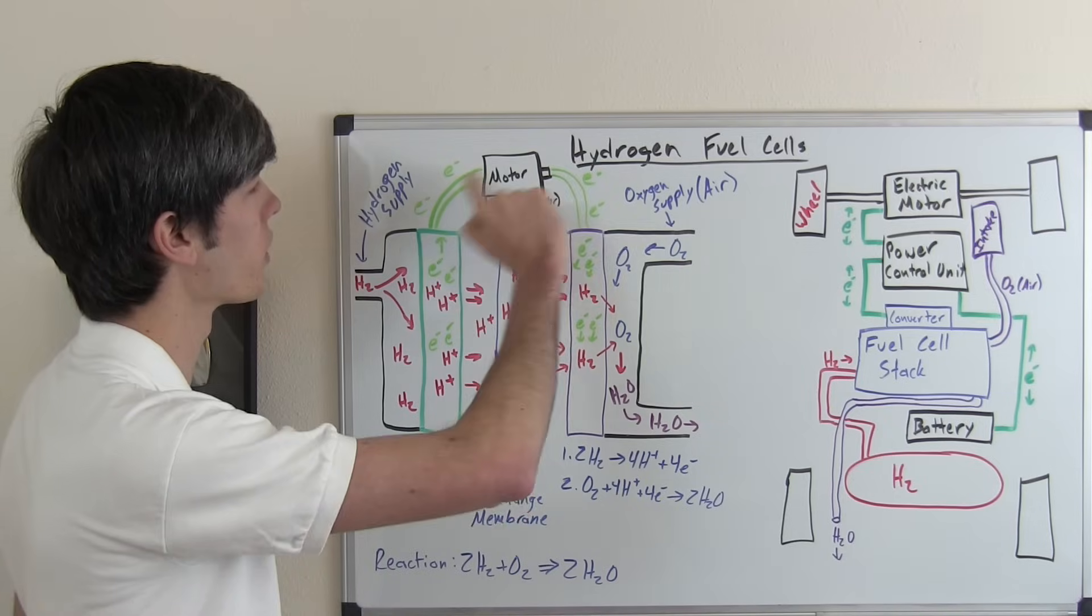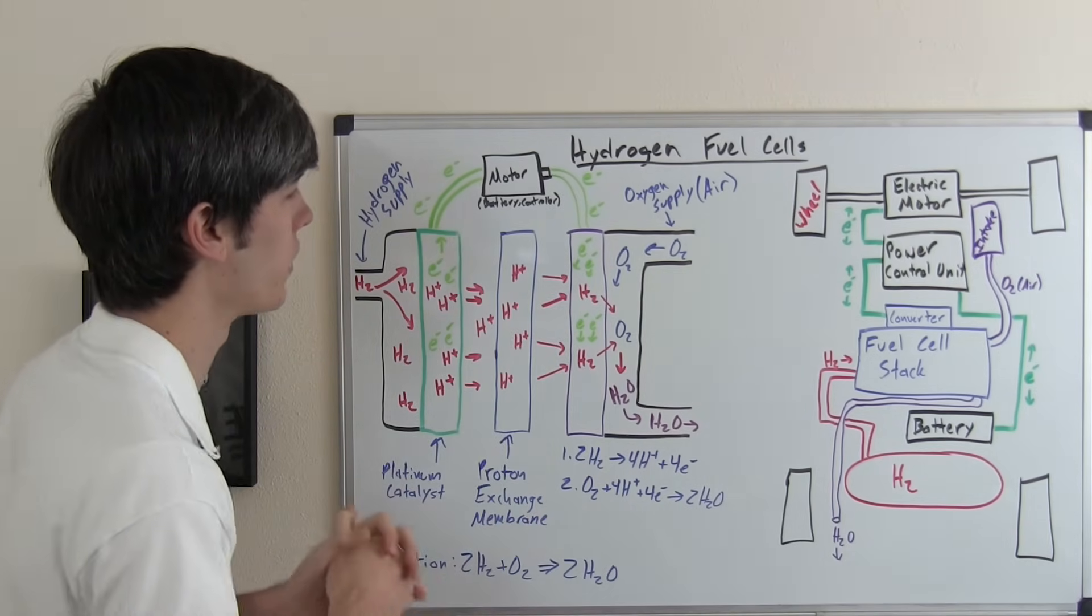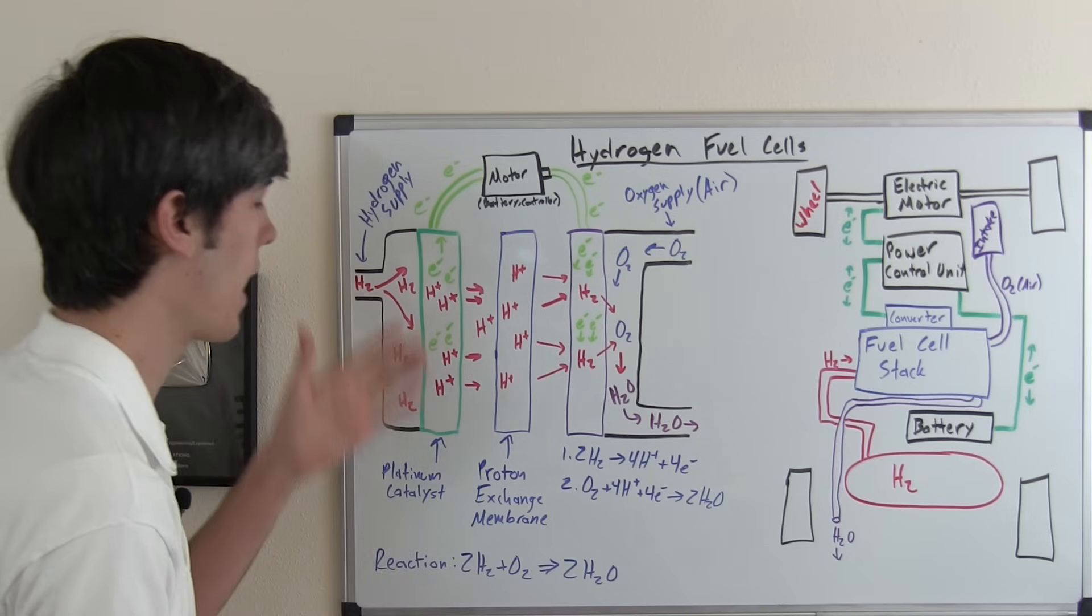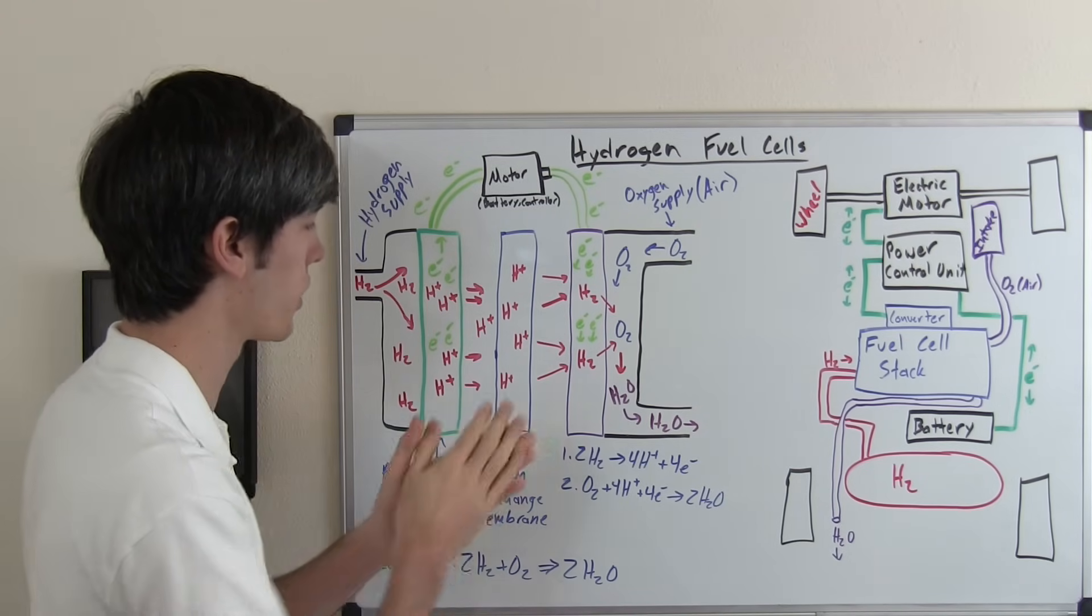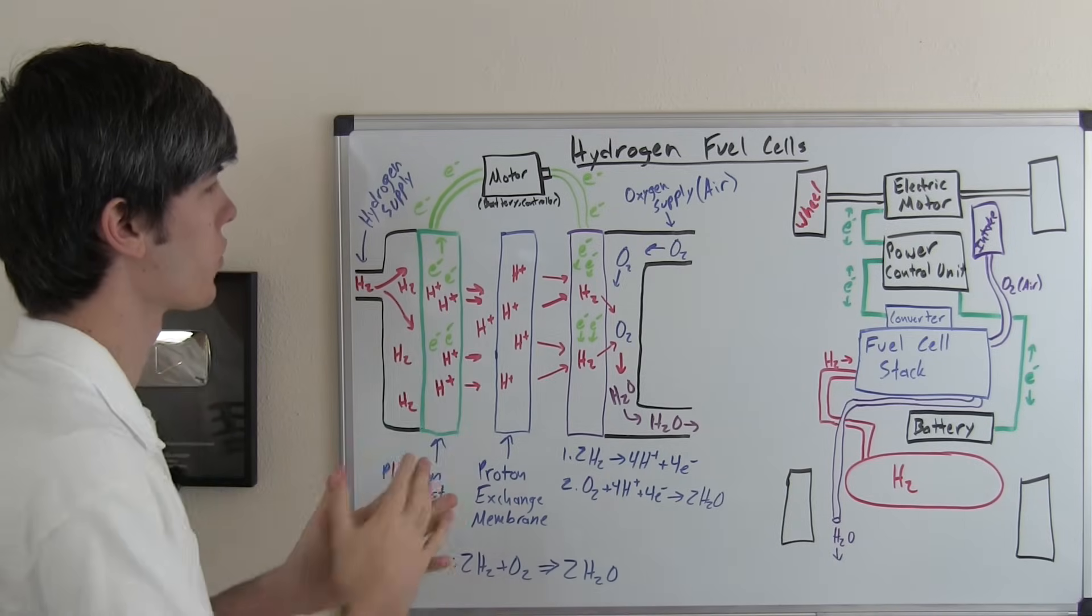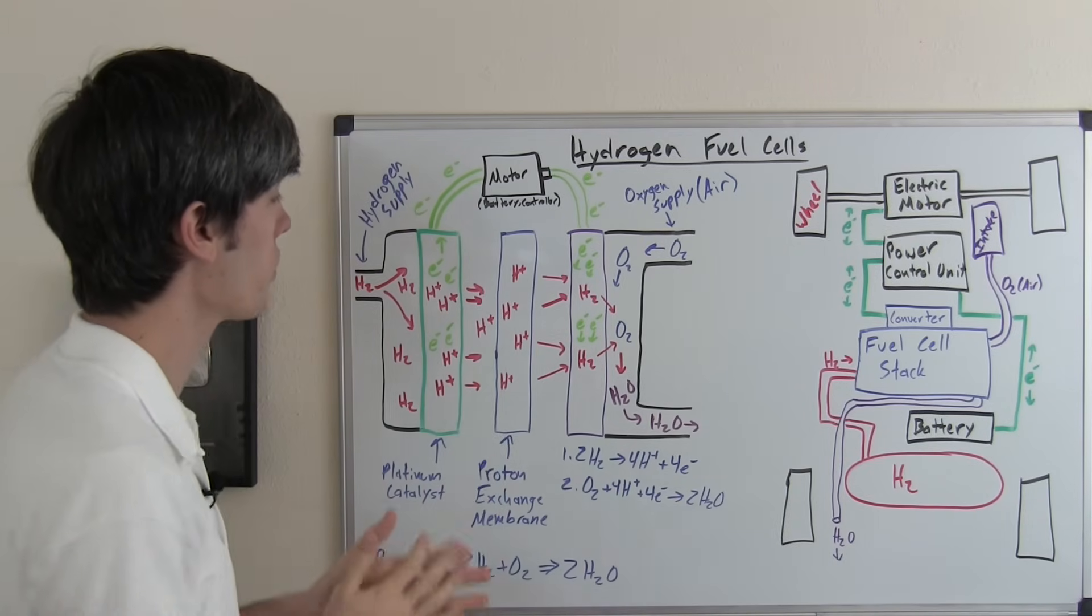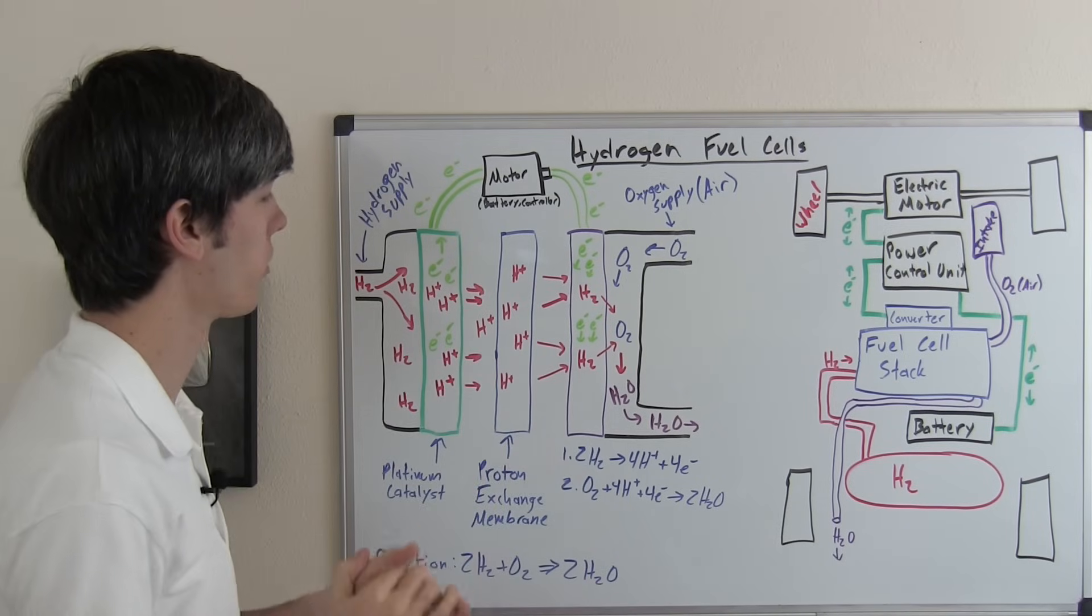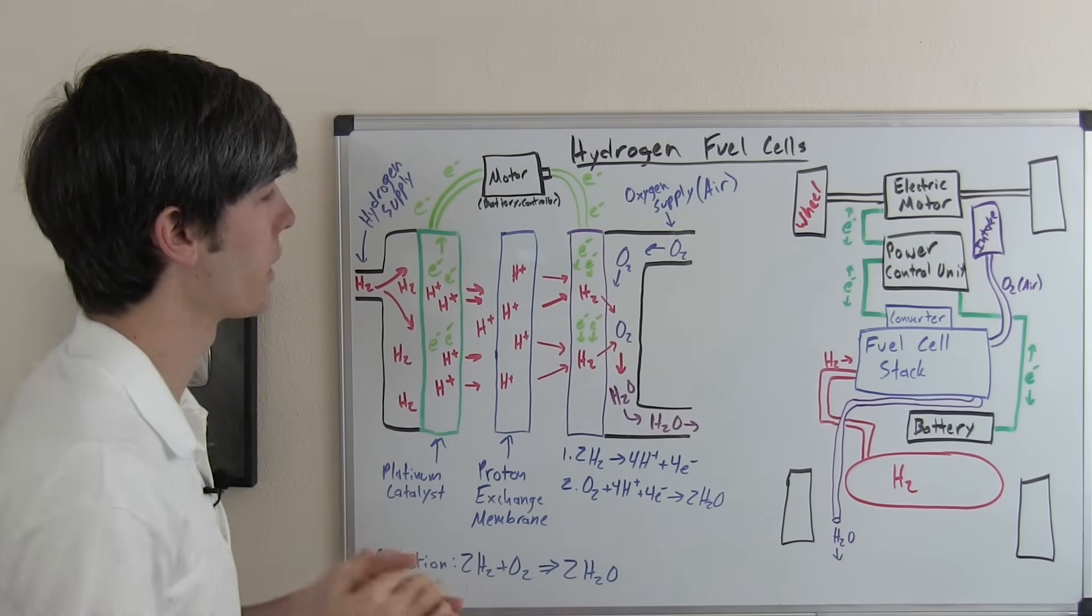The point is those electrons are going to travel through something, thus providing electricity. And then they're going to come back after the hydrogen atoms have passed through this proton exchange membrane. So after the electrons have gone and done their thing, they'll return to the fuel cell where they then combine with the positively charged hydrogen atoms to form H2.